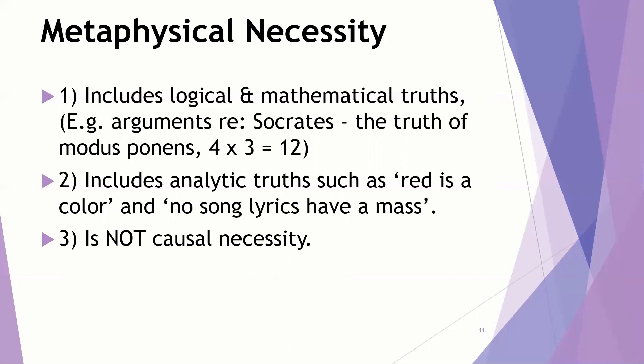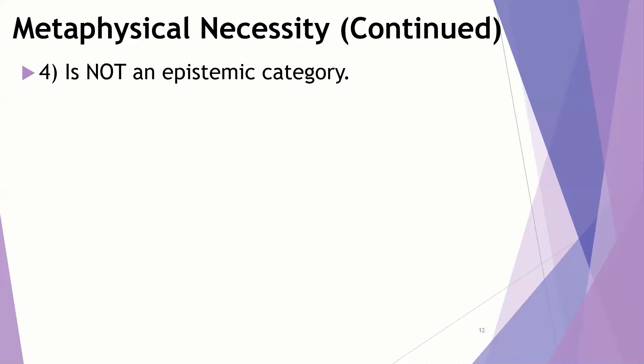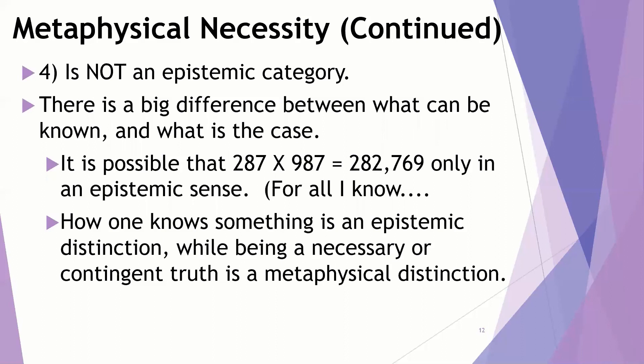One more point. This is not an epistemic category. There's a difference here between metaphysics and epistemology, and this significant difference applies here. We're not talking about an epistemic category when we're doing metaphysical necessity. There's this huge difference between what can be known and what is actually the case. It's possible one might think, well, for all I know, 287 times 987 equals 282,769. Yeah, that seems about right.